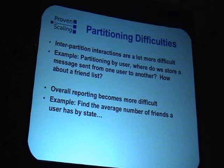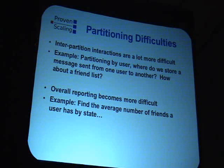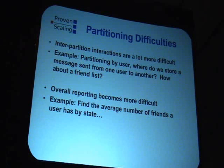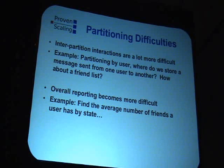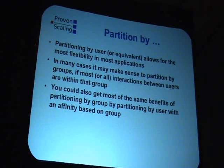The second problem is that overall reporting becomes a lot more difficult. Now we've got ten different systems each with a piece of our data, but we still want statistics about all users — for example, find the average number of friends a user has by the state or country they live in. Since we don't have a good way to look up users by country across partitions, we end up in one of two scenarios: either keep summary statistics somewhere so we don't have to do cross-partition reporting at all, or build a system to allow reporting across all partitions.